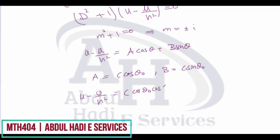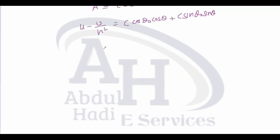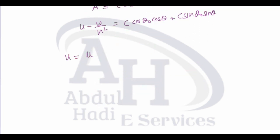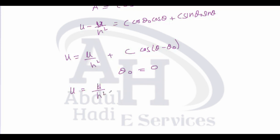The general solution is u = μ/h² + C·cos(θ − θ₀). We can combine the cosine and sine terms using the identity C₁cos(θ) + C₂sin(θ) = C·cos(θ − θ₀). Here θ₀ is a constant of integration and can be made equal to zero by rotating the baseline.